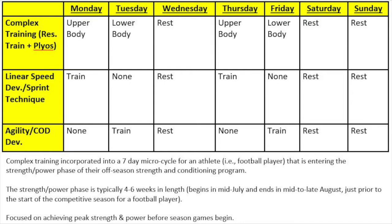Looking at the start of the week on Monday, this athlete will perform upper body complex training. They may perform an exercise like a barbell bench press as the resistance training exercise, followed by a rest period prior to performing a plyometric exercise, such as an overhead medicine ball throw. They will also train on that same day for speed development — sprint technique work, over-speed training, under-speed training, and things like that.